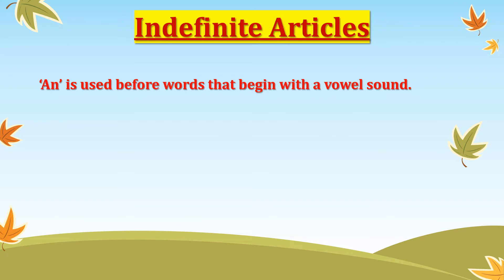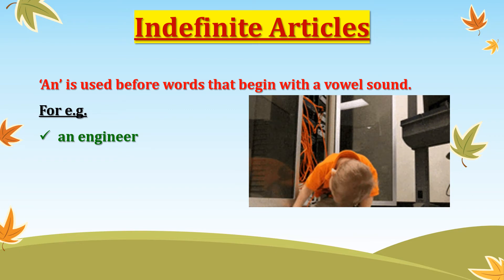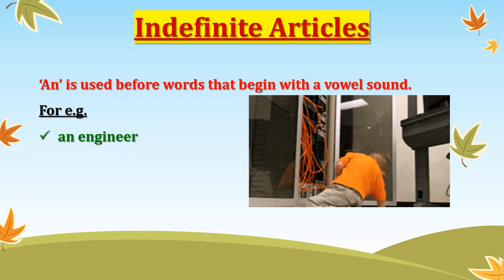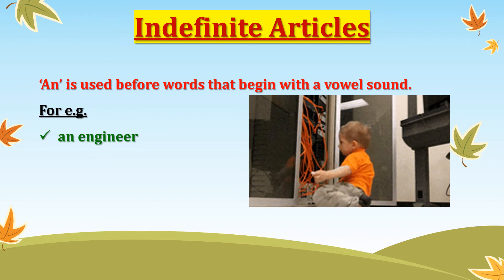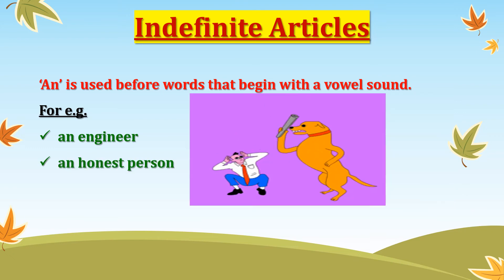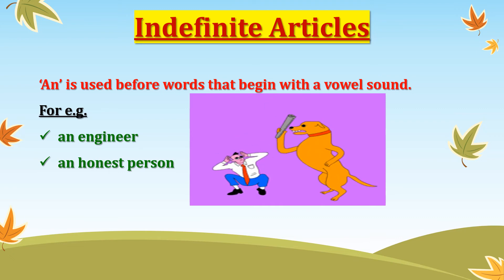'An' is used before words that begin with a vowel sound. Again, we go by the sound and not the letter. For example, 'an engineer' — this word 'engineer' is starting with a vowel sound, that is why we use 'an' with it. 'An honest person' — though this word starts with 'H', the sound is 'honest'; H is silent here. Since the word is starting with a vowel sound, we use 'an' with the word 'honest'.